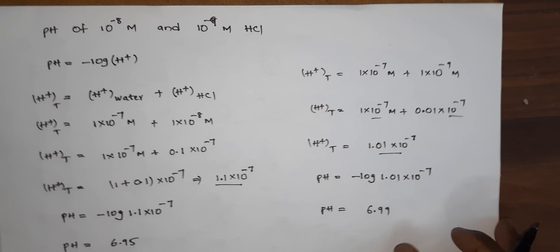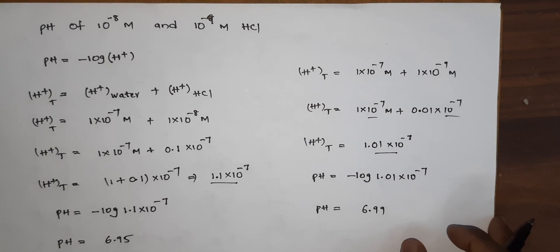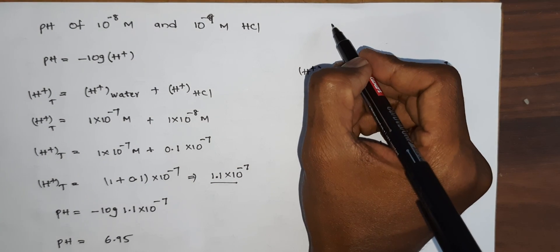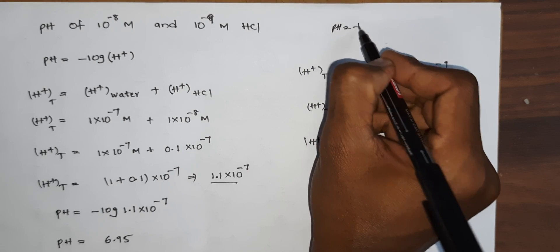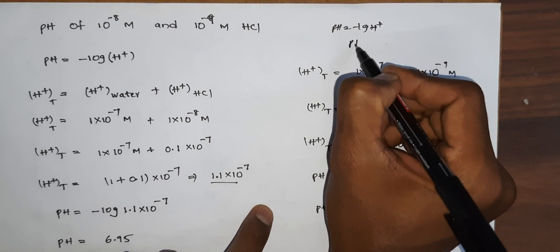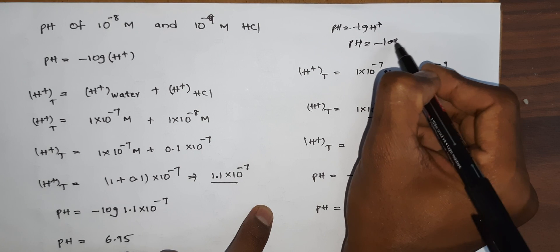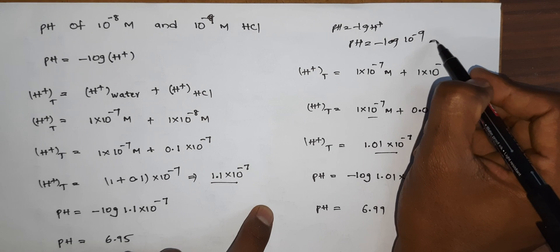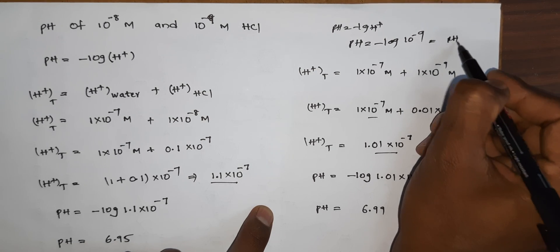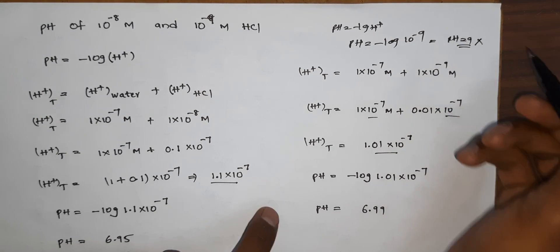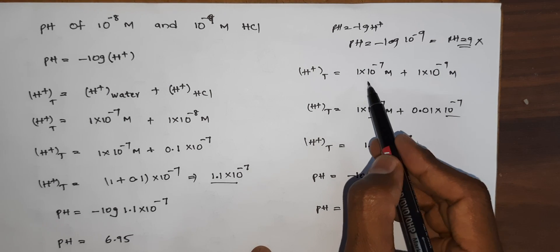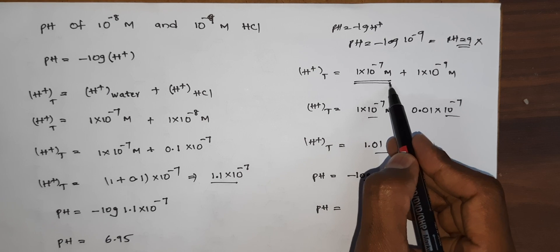For a dilute acidic solution, we cannot exceed pH greater than 7 because it is an acidic solution. If you directly calculate pH as minus log of 10⁻⁹, you get pH equal to 9 — but this is wrong. So always consider the H⁺ concentration of water. Thank you.